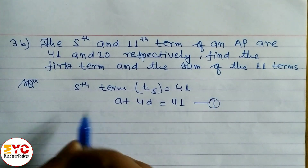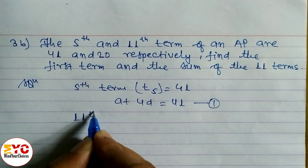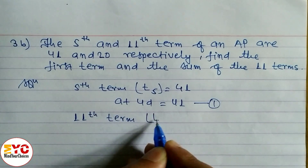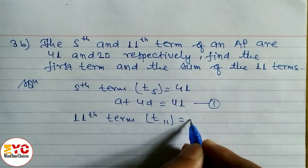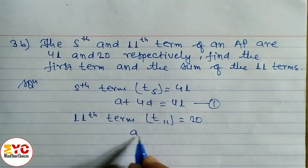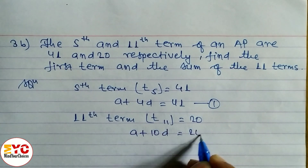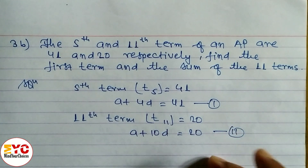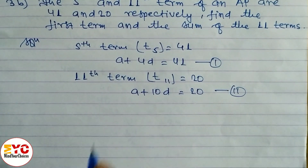Similarly, the 11th term is given. T11 equals 20. The formula of the 11th term gives A plus 10D equals 20. That is equation 2. Now we have to solve equations 1 and 2 to get the value of A as well as D.